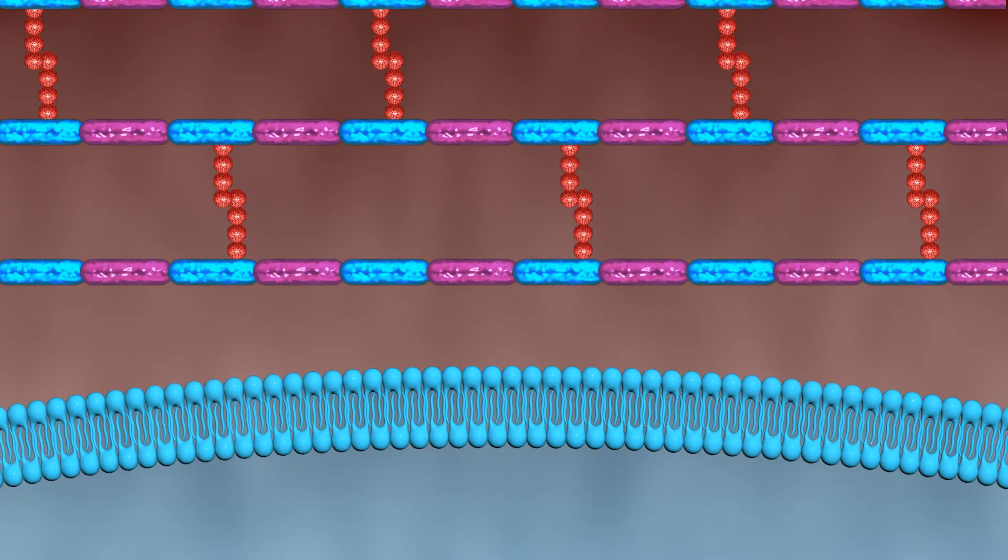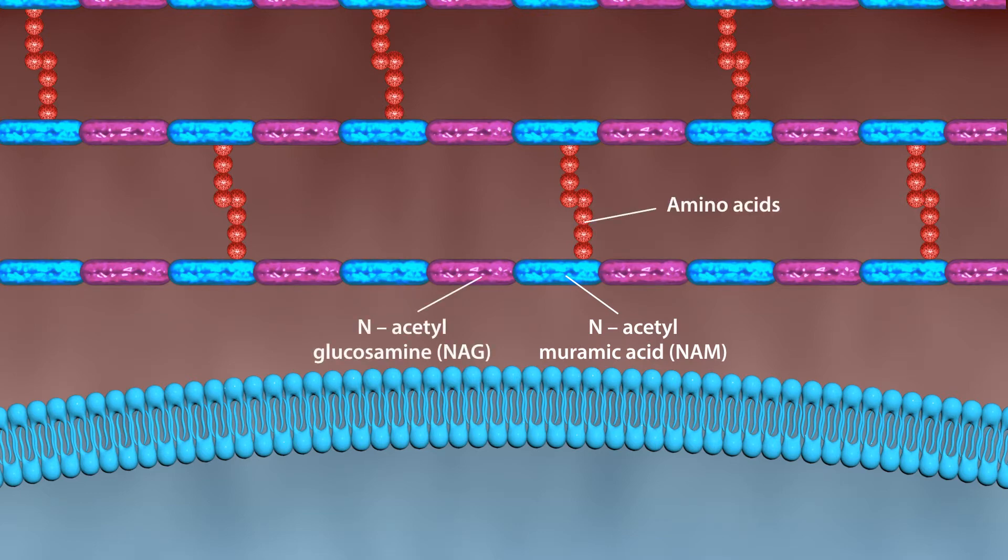Peptidoglycan is a polymer of N-acetylmuramic acid alternating with N-acetylglucosamine, which are cross-linked by a chain of four amino acids.